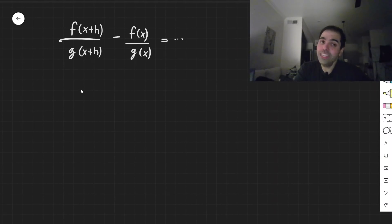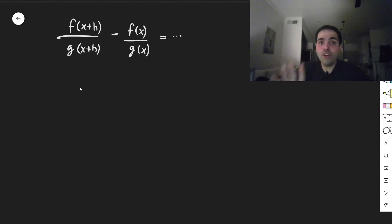But more interestingly, we can also use this to show a beautiful and elegant proof of the chain rule, because what do we have? Well, let's try to find f composed with g of x plus h. Well, that is f of g of x plus h.